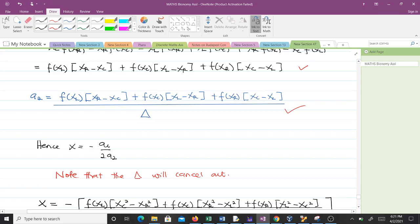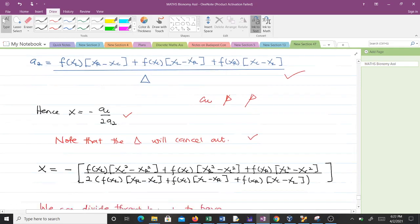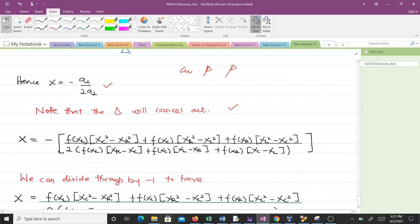Note that we had x = -a₁/(2a₂). You see a₁ has a denominator of Δ, a₂ also has a denominator of Δ, so as they divide they will cancel out. That's why there was no need to compute Δ. Now x will be -a₁/(2a₂), which gives us this substitution. We can divide by negative one to get this formula.